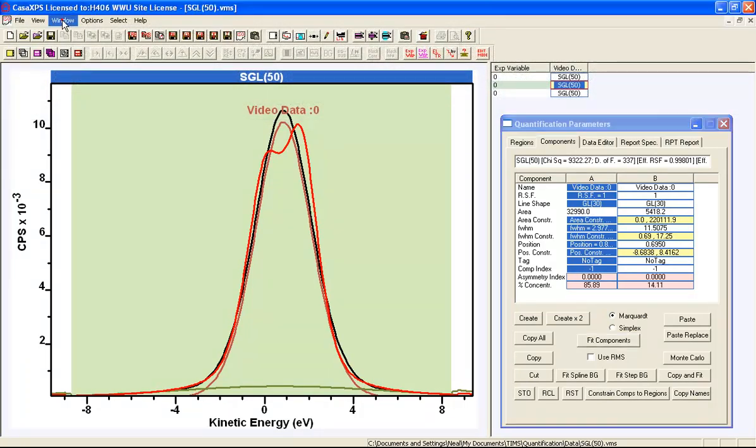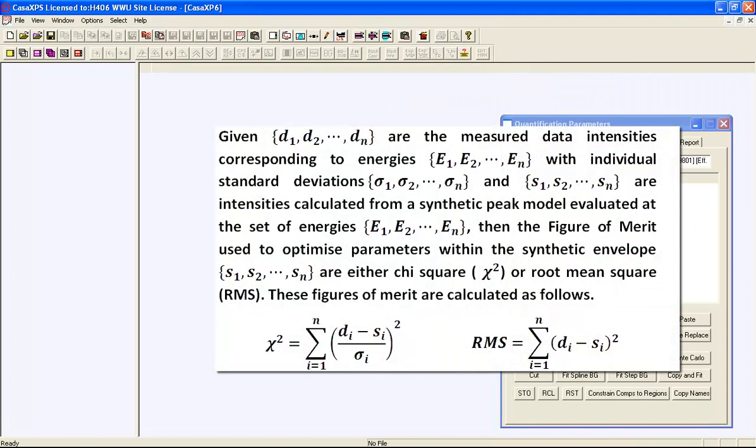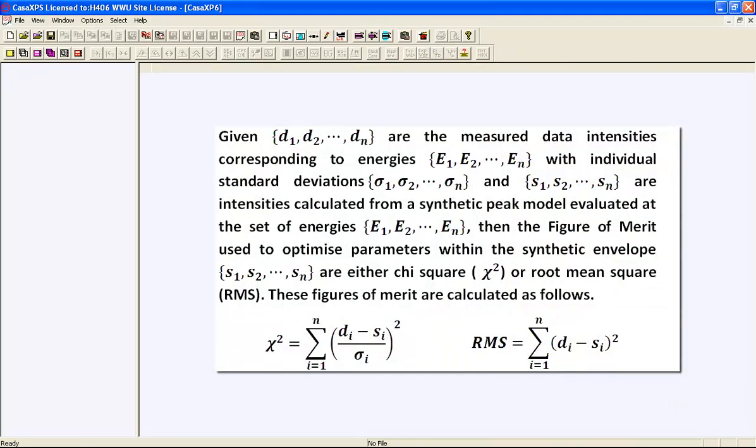We can see why this is the case if we look at the figure of merit used in the optimization. We've got two different forms here. The root mean square just relies on a data bin and the difference of that data bin from a synthetic envelope calculated at the energy for that data bin and the square of that. We sum these and try to minimize the RMS by various optimization algorithms, and that gives you one solution.